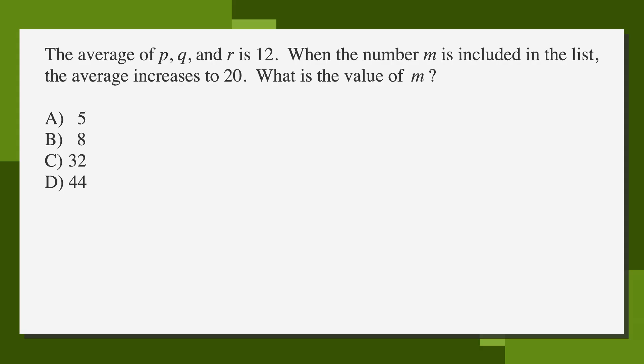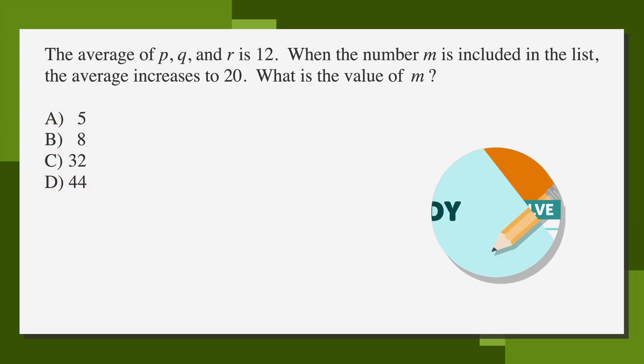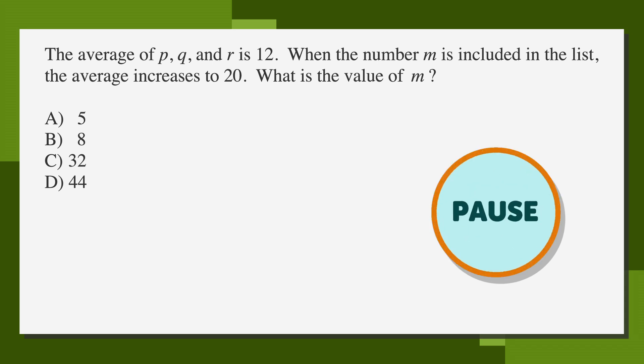Here's the problem: The average of p, q, and r is 12. When the number m is included in the list, the average increases to 20. What is the value of m? The answer choices are A) 5, B) 8, C) 32, and D) 44. Pause the video now to solve.